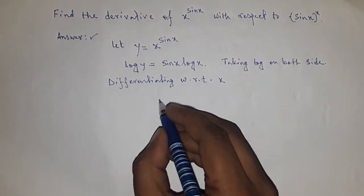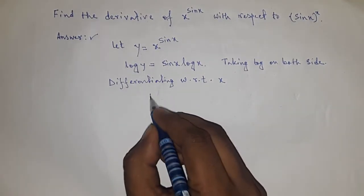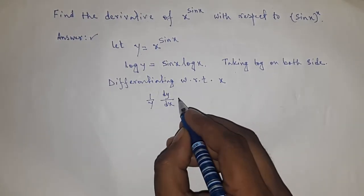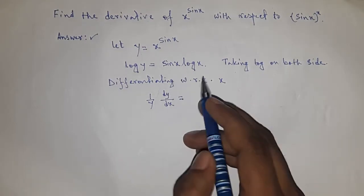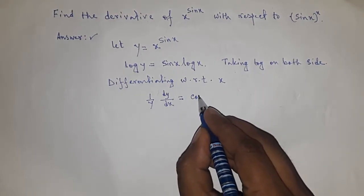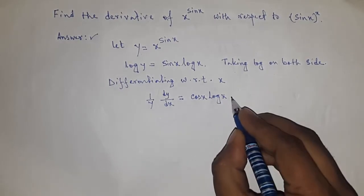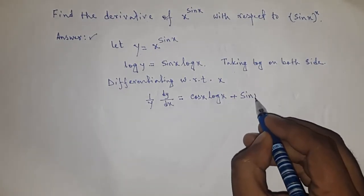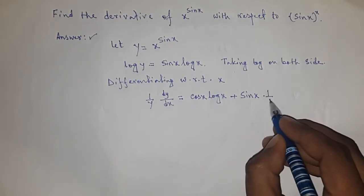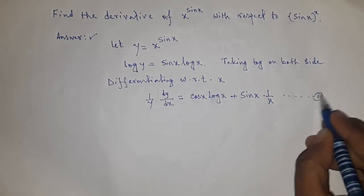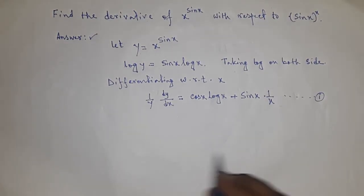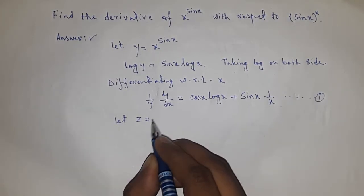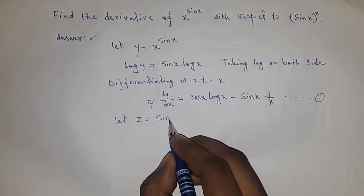Now differentiating with respect to x, we have 1 by y times dy/dx. We have two functions, so: derivative of sin x is cos x times log x, plus sin x times derivative of log x, which equals 1 by x. This is equation 1.